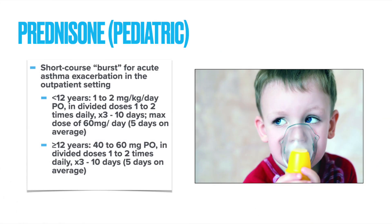Short bursts of prednisone are also indicated for pediatric patients with asthma exacerbations. The length of treatment is generally five days. For children younger than 12 years old, the dosing is weight-based. However, the maximum daily dose of prednisone is 60 milligrams, and that should be observed for both groups younger than 12 and older than 12 years old.